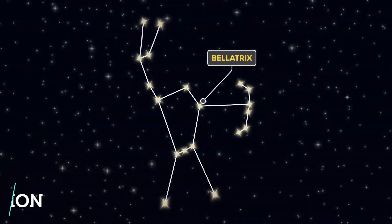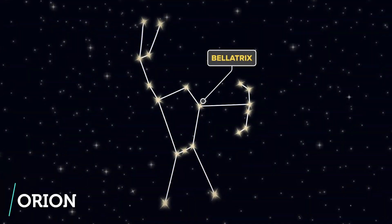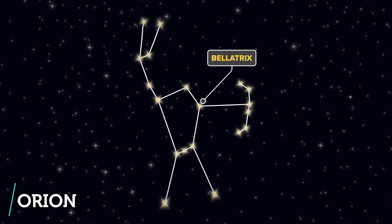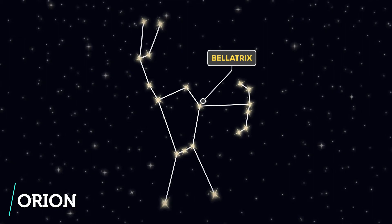Take the star Bellatrix in the constellation Orion, for example. It is so far from the Earth that the light we see from it is 300 years old.